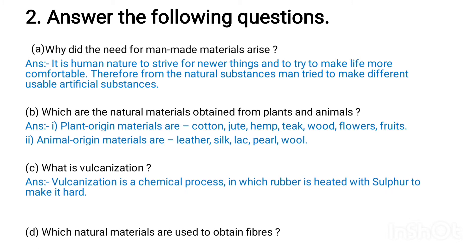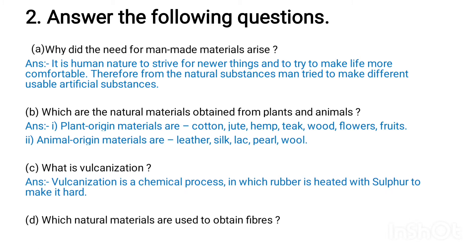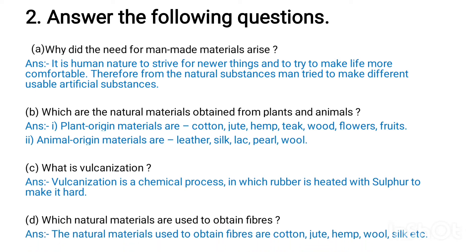Question 2c: What is vulcanization? Answer: Vulcanization is a chemical process in which rubber is heated with sulfur to make it hard.